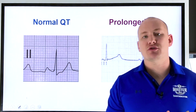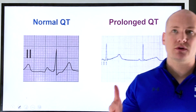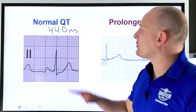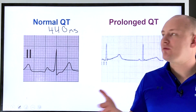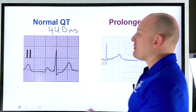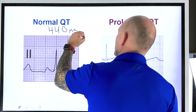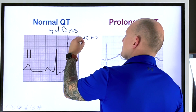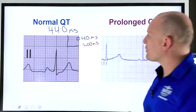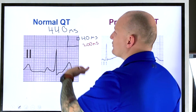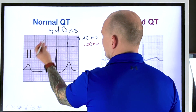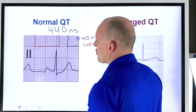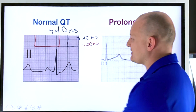A normal QT interval is under 440 milliseconds. To give a reference point on an actual ECG, each small box is 40 milliseconds and each large box is 200 milliseconds. So a normal QTC should be approximately two large boxes plus one small box — that's 440 milliseconds — which is what we're looking for when measuring a normal QT interval.